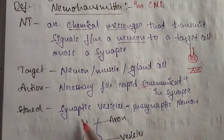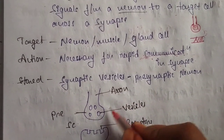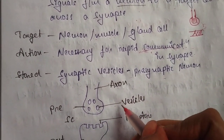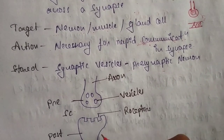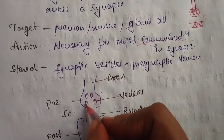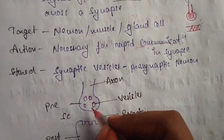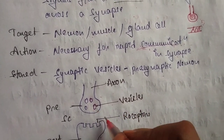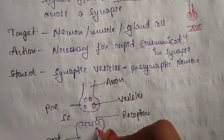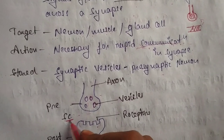Neurotransmitters are stored in the synaptic vesicle. You can see here synaptic vesicles that are present in the pre-synaptic neuron — pre-synaptic neuron and post-synaptic neuron. These round circles are synaptic vesicles. The neurotransmitter is stored inside the vesicles. Receptors are present in the opposite neuron, that is the post-synaptic nerve membrane. This is the synaptic cleft.